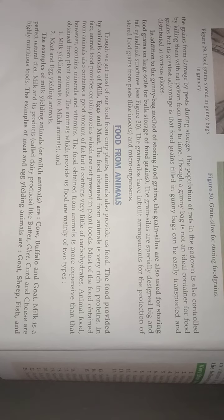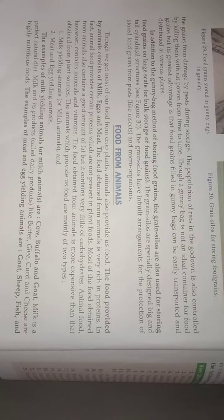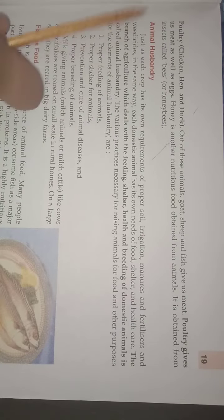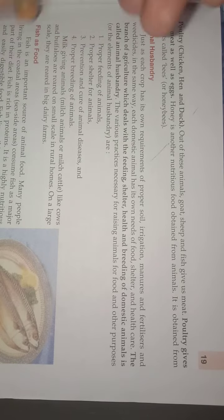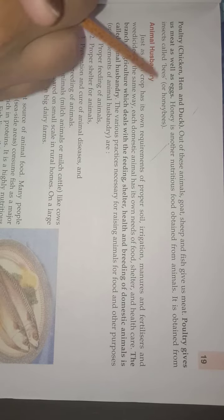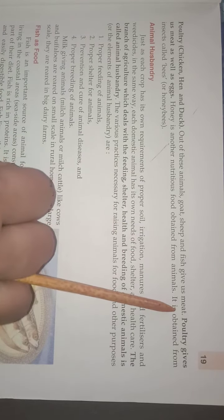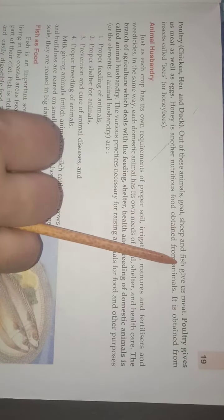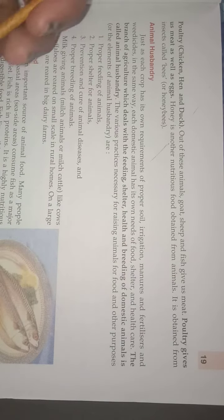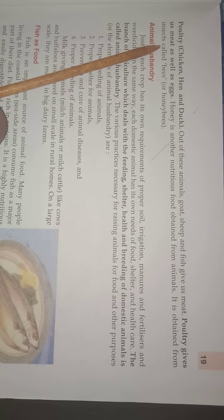Examples of meat and egg-yielding animals are goat, sheep, fish, and poultry. A poultry farm is a place where domesticated animals are raised. Out of these animals, goat, sheep, and fish give us meat. Poultry animals give us meat as well as eggs.